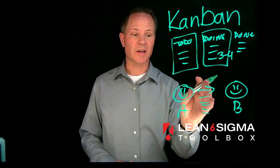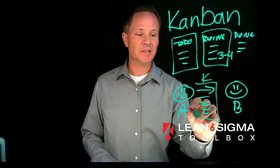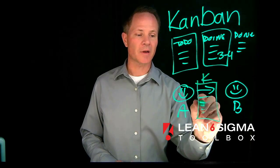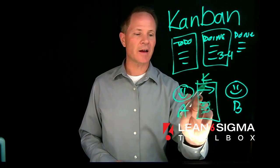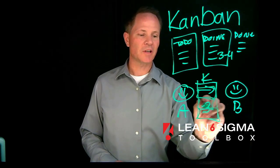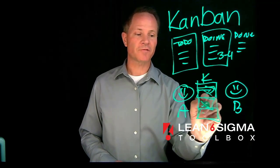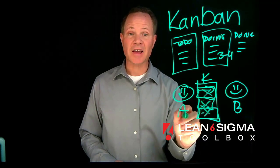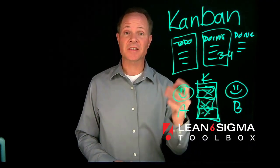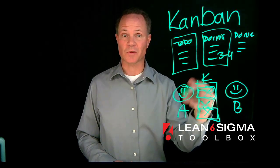So what you do is create a Kanban, and the Kanban limits the amount of work in process to maybe three units. You might have a location here for one, two, three different parts, and once those slots are full, person A stops working because the Kanban is full. The signal to stop working comes from the fact that the Kanban has reached its limit.